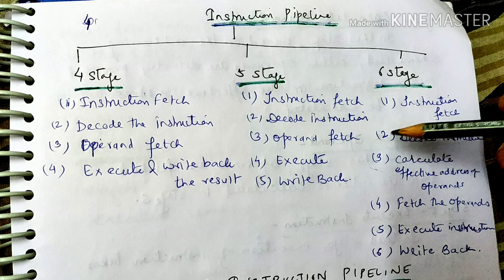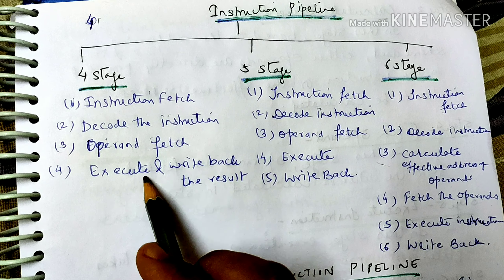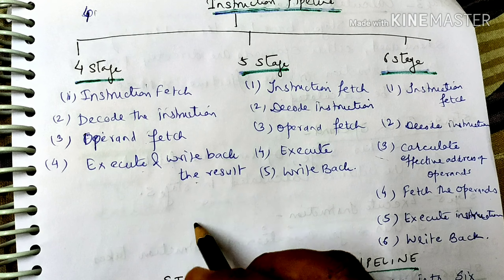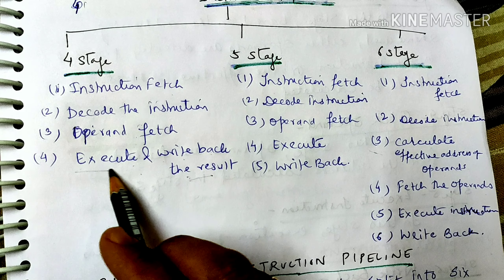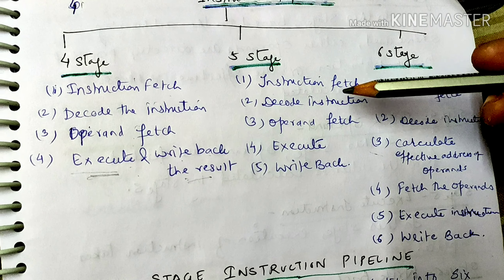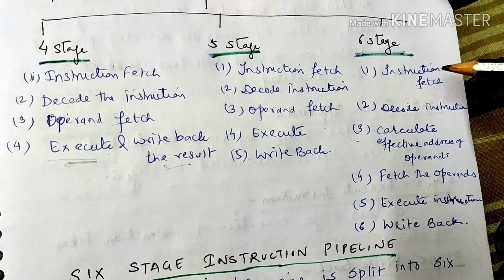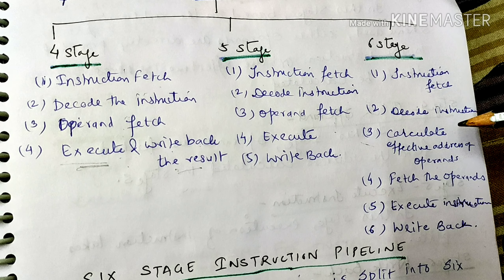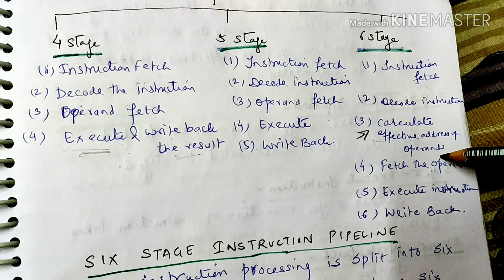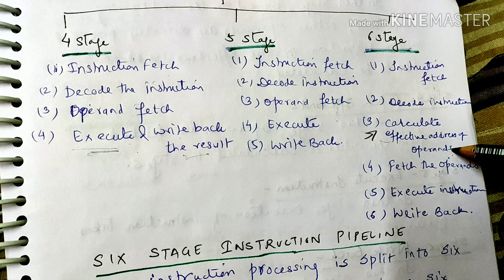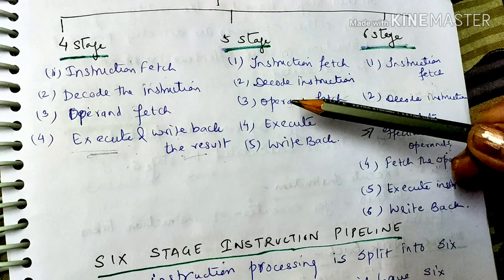In instruction pipeline design, we can have a 4-stage, 5-stage, or 6-stage pipeline. In a 4-stage pipeline: instruction fetch, decode instruction, operand fetch, execute, and write back — where two phases are merged. In a 5-stage pipeline: instruction fetch, decode instruction, operand fetch, execute, and write back. In a 6-stage pipeline: instruction fetch, decode instruction, then an additional stage to calculate the effective address of operands, fetch operands, execute instruction, and write back.